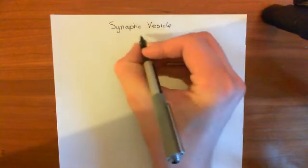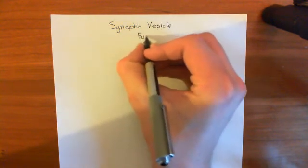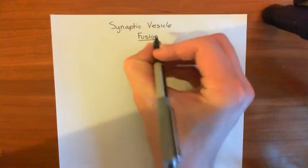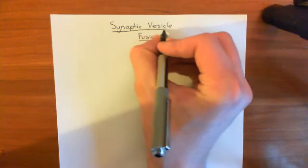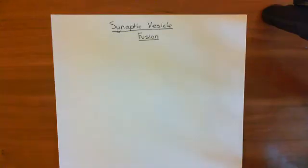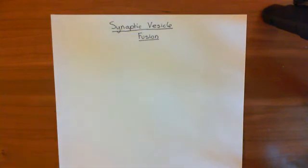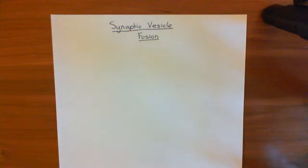Before we get to synaptic vesicle fusion, I'd like to present this as a complete story. We're going to start with synaptic vesicles getting docked at the presynaptic membrane, then talk about what happens when an action potential arrives in the axon terminal, how that leads to a calcium signal, how the calcium signal activates synaptotagmin, what synaptotagmin does to promote fusion, and then we'll look at what actually happens in fusion — the two possibilities: kiss-and-run fusion or full fusion — and we'll put the whole story together.